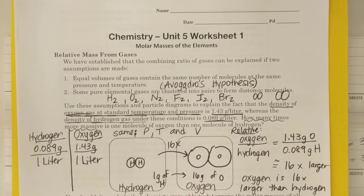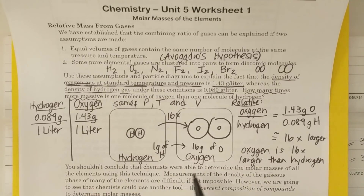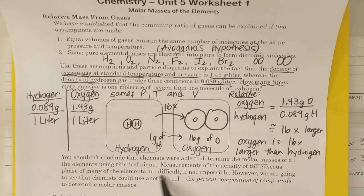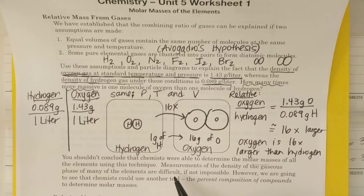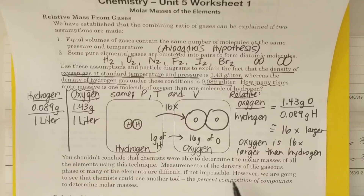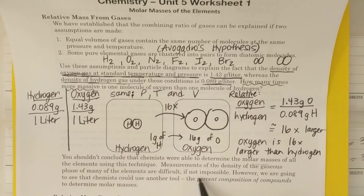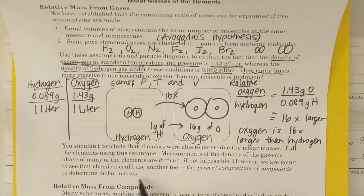Now, scrolling down: you shouldn't conclude that chemists were able to determine the molar masses of all elements using this technique. Measurements of the density of the gaseous phase of many elements are difficult, if not impossible. For example, getting the gaseous phase of sodium metal requires a lot of energy and is quite dangerous. However, chemists could use another tool — the percent composition of compounds — to determine molar masses.